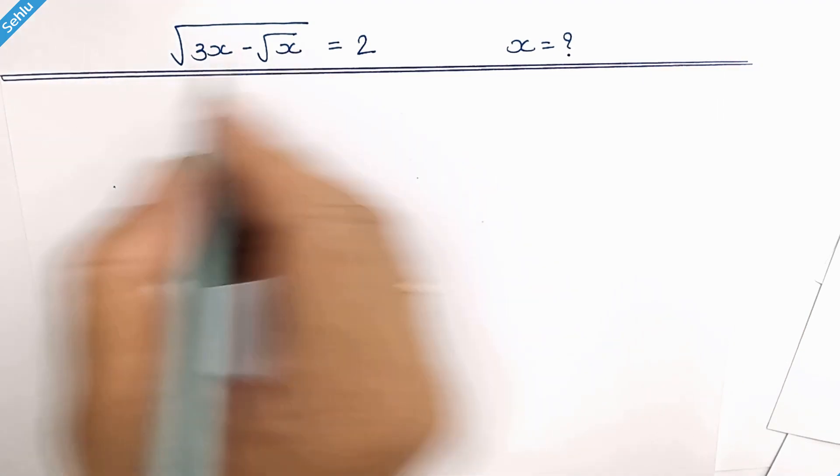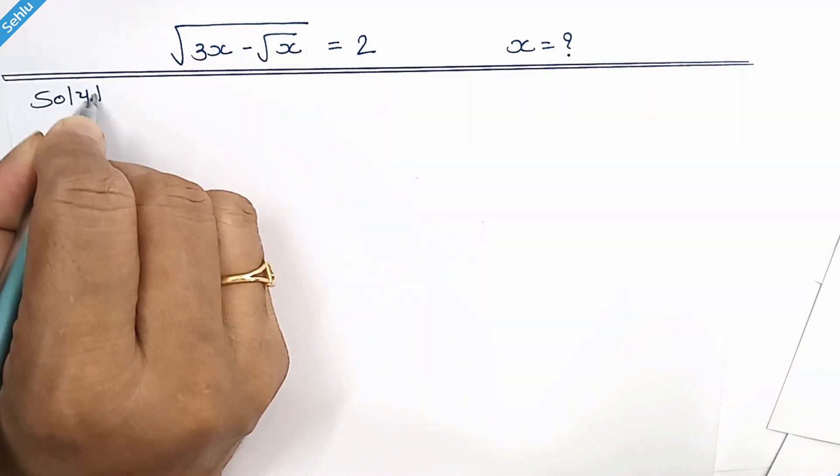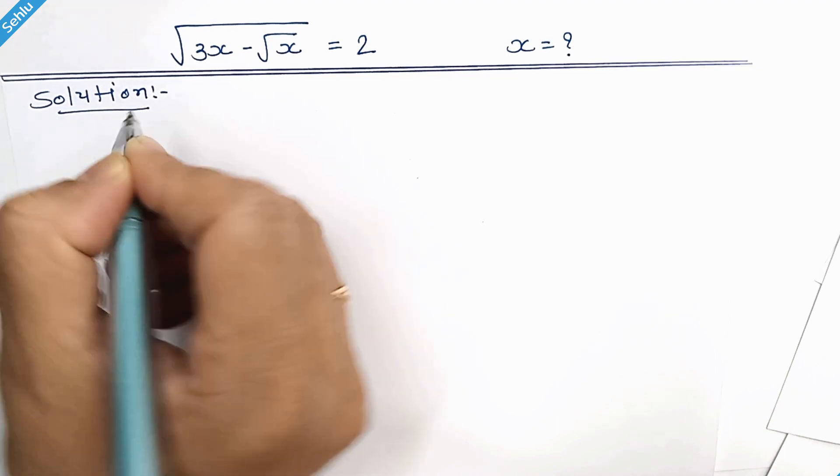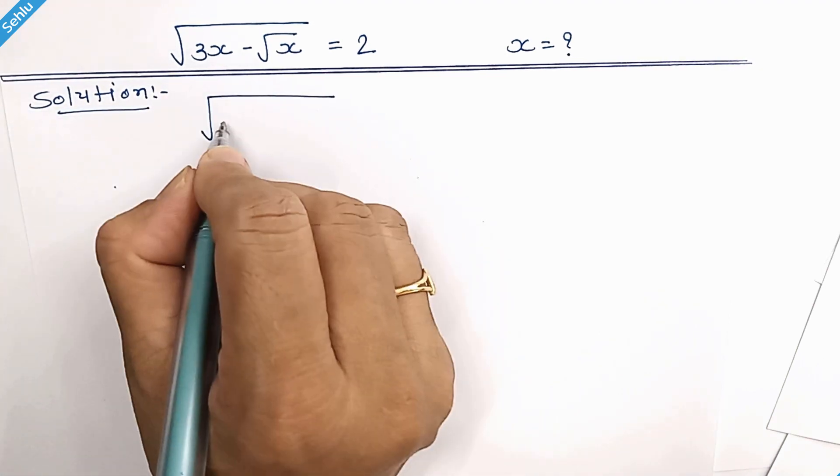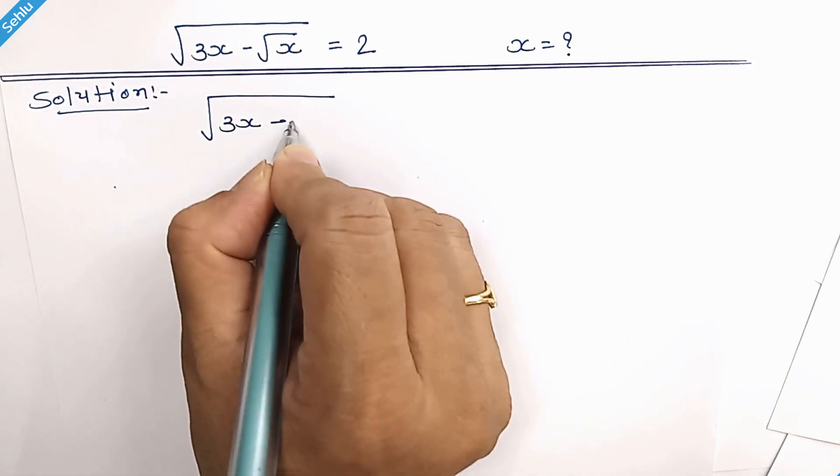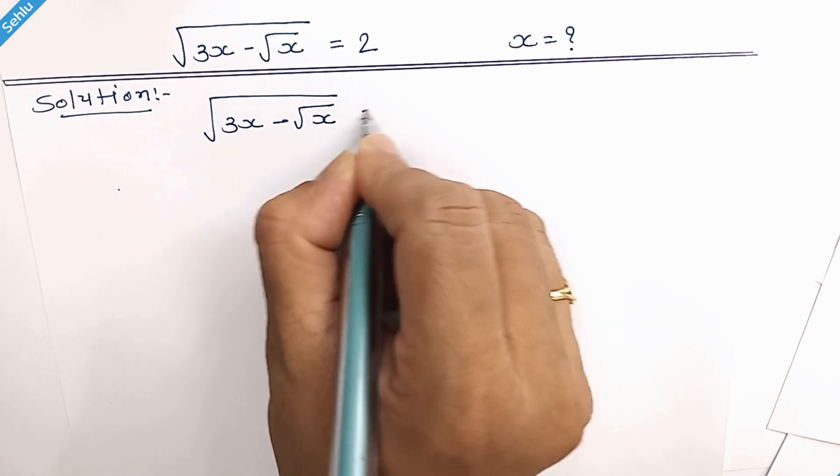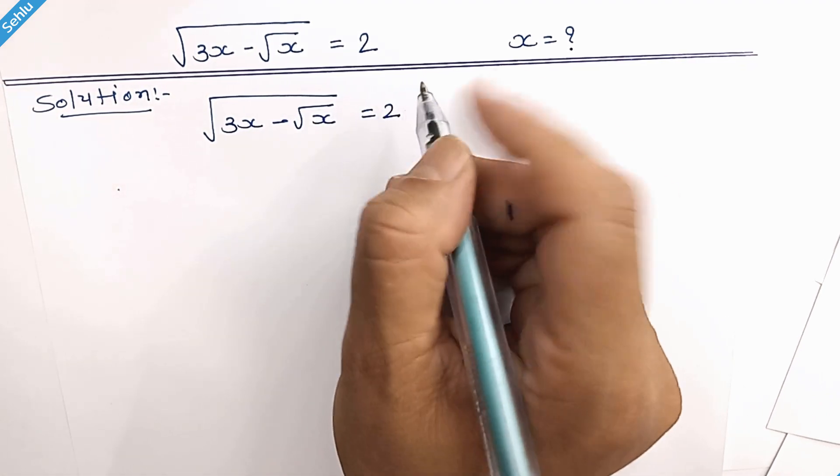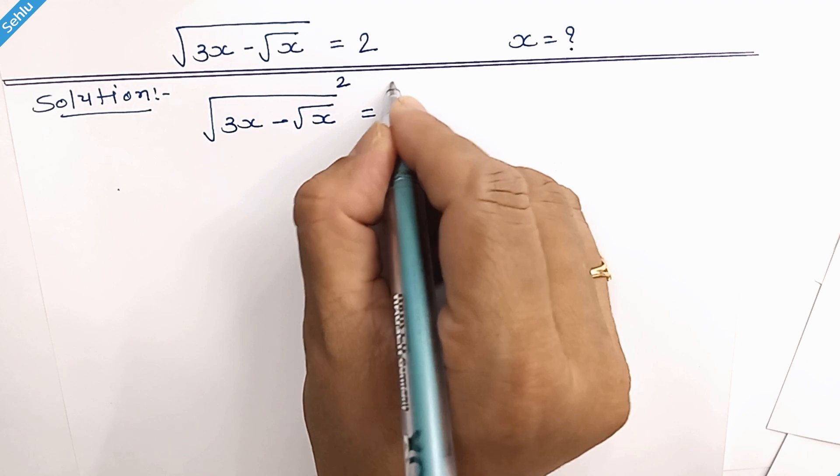Let's solve this. The question is: square root of 3x minus square root of x equals 2. What do we do first? Square both sides.